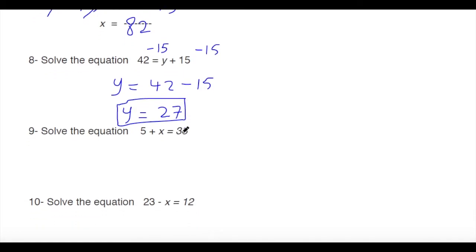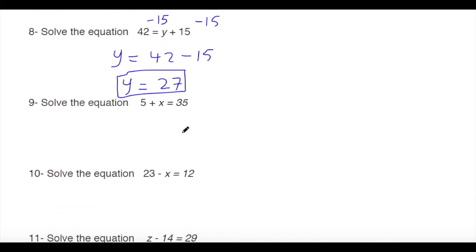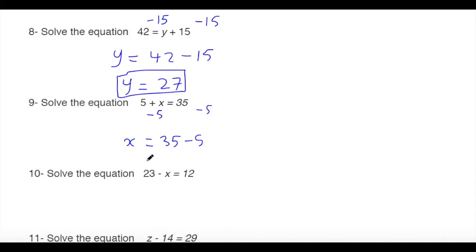Next: solve 5 plus x equals 35. Subtract 5 from both sides, so x equals 35 minus 5, which gives x equals 30.